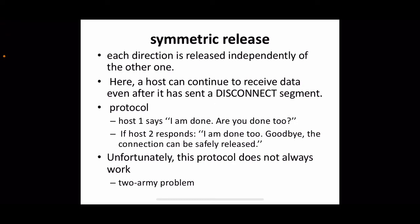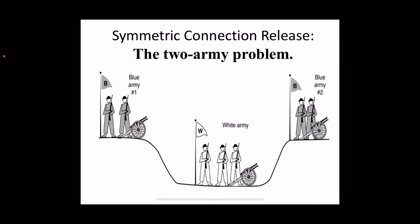However, there is a problem in this case called the Two Army Problem, which arises when using mutual agreement for connection release. To understand the Two Army Problem: there is a white army encamped in a valley, and on both surrounding hillsides are two groups of a blue army. The white army is larger than either of the blue armies alone.